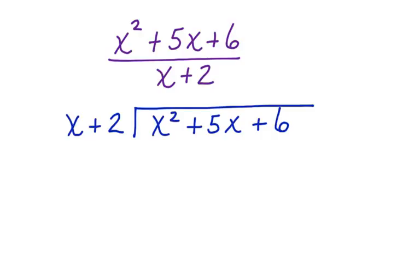x plus 2 doesn't go into just x squared, but it does go into this whole term. And I can say that it goes in there x times. So I'm going to bring up an x. Now, just like I would in long division, I'm going to multiply this x times both of these terms. x times x is x squared. x times 2x is a positive 2x.